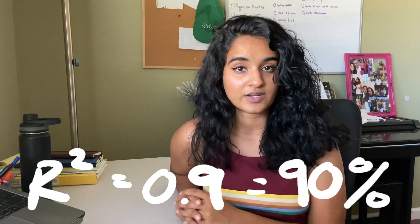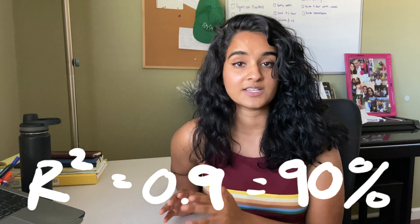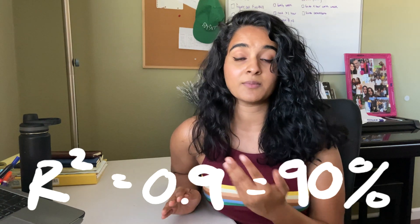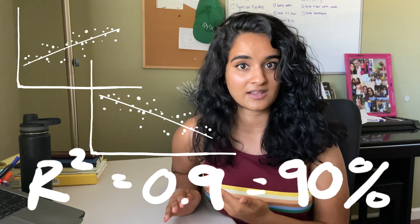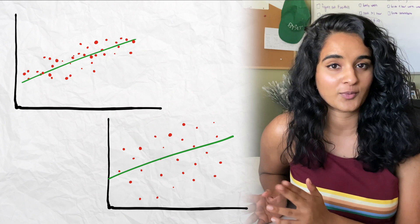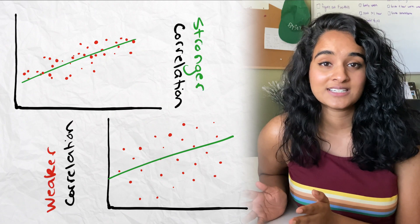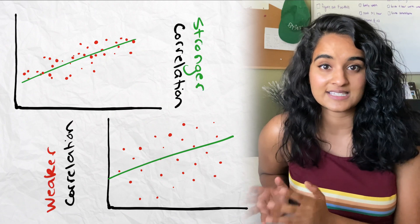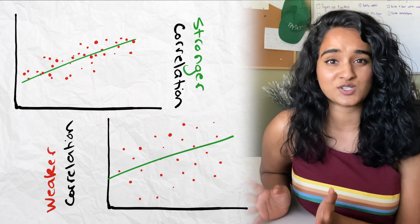R squared only tells you the strength of the correlation — it doesn't tell you the direction. For example, an r squared of 0.9 or 90% means that 90% of the variation in y is due to the regression on x. It can be a positive or negative correlation, but the strength is 90%. Looking at these two graphs, the one on top has a higher correlation — you can see the data is more closely knit together around the regression line. You don't want data that's super spread out. So how does a computer actually calculate r squared? That's where SST, SSR, and SSE come in.